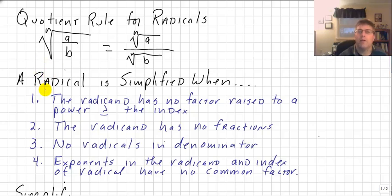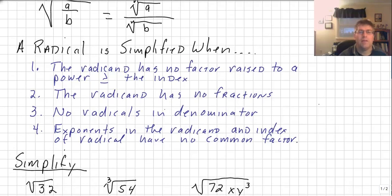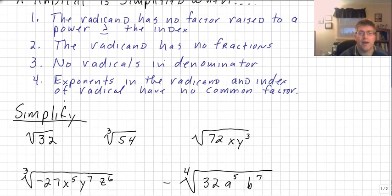A radical is simplified when: the radicand has no factor raised to a power greater than or equal to the index; the radicand has no fractions in it; there are no radicals in the denominator; and exponents in the radicand and the index of the radical have no common factor. Some of this is intuitive — you'll see it as we go through examples and simplify until we can't simplify any further.